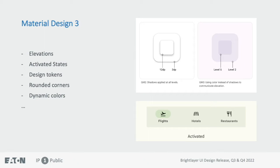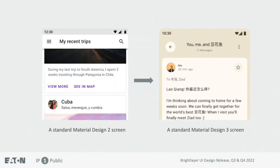In May of 2021, Google announced Material Design 3, which comes with a major update in design principles and changes the style of a lot of components. Noticeably, things that made Material Design 2 iconic in the design industry — such as elevations, activated states, design tokens, rounded corners, and dynamic colors — are all getting changed. Recently, they pulled the trigger to officially switch from Material Design 2 to this newly designed Material Design 3. Because BrightLary UI inherits everything from Material Design, this update can have a profound impact on our platform. We're still evaluating the impact, but we are already making small steps to understand the design principles of Material Design 3, such as the use of design tokens to communicate.